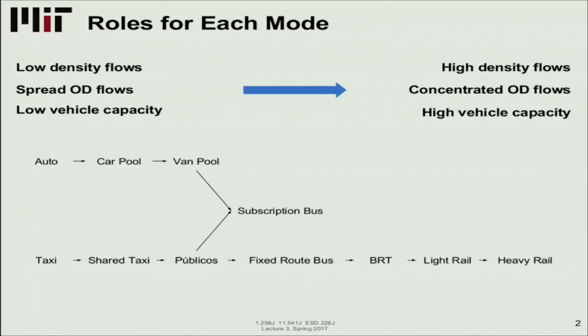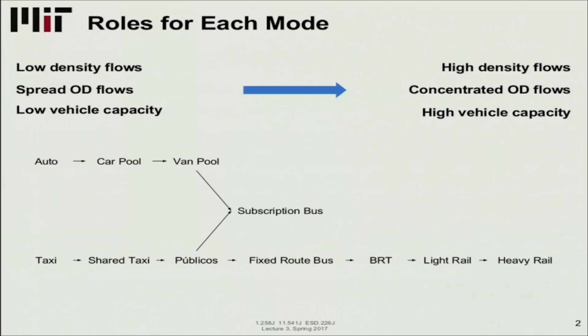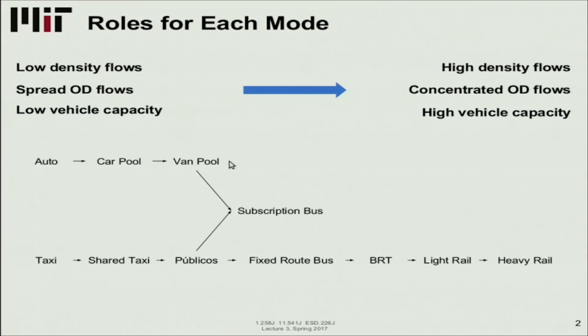So what are the roles for each mode? When we think about the different modes that can be used for transport, we can think in different dimensions. One of them is going from low density to high density. From very sparse OD matrices, where origins and destinations are scattered, to concentrated origin-destination pairs along a corridor with many people traveling. This happens more in cities than rural areas, going from low vehicle capacity to requiring high vehicle capacity. In that direction, we have private modes on top and public modes at the bottom.